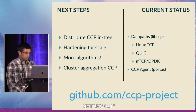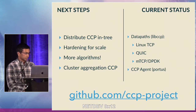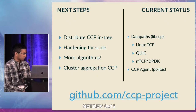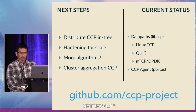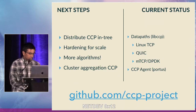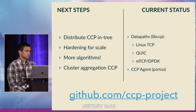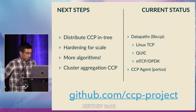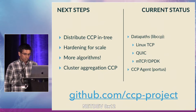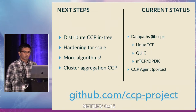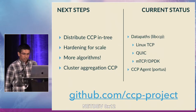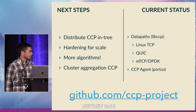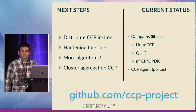Moving forward, we'd like to see CCP distributed as an entry kernel module once we sort out some minor issues with hardening it for scale. We're happy to work with congestion control algorithm developers to implement their algorithms using our library. Our current datapath component implementations and the CCP agent are all on GitHub, along with implementations of Cubic, Reno, BBR, Copa, and Nimbus — our own algorithm. One caveat is the QUIC datapath implementation: we're not sure how to distribute our patch without hosting all of Chromium ourselves.